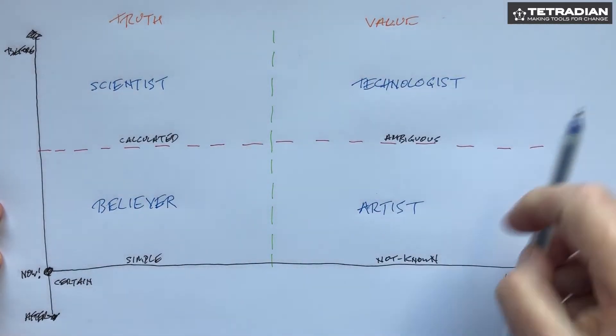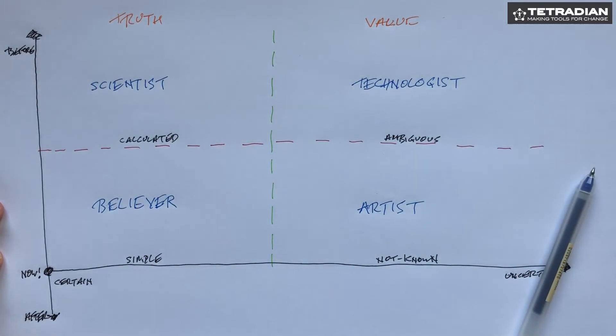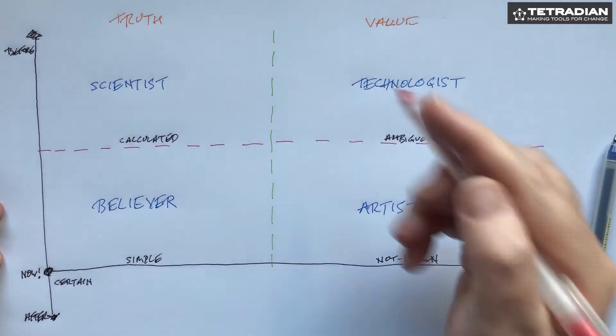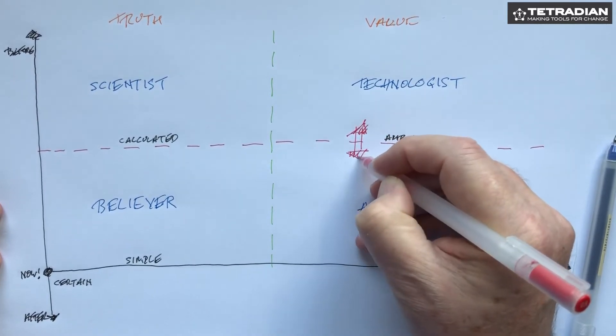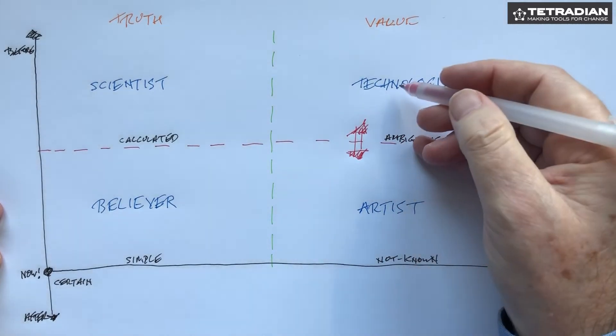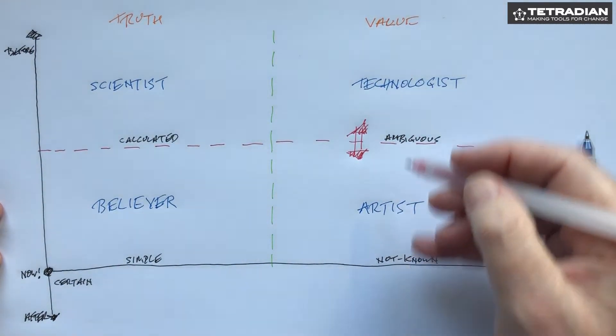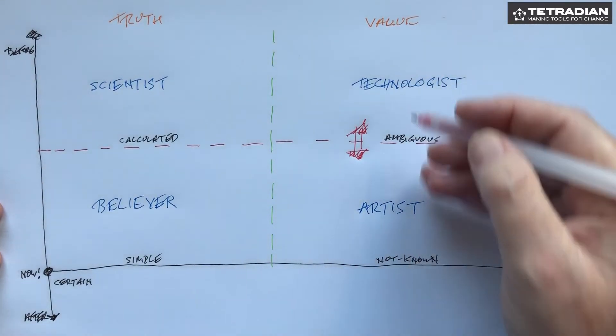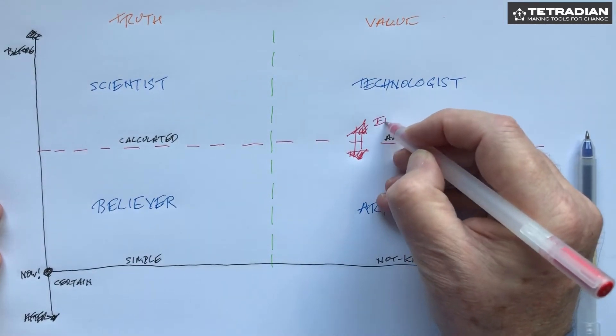Now between each of these there are edges. So this one we might describe as the edge of innovation. An artist comes up with an idea and it bounces backwards and forwards between experiment, new idea, experiment, new idea, but we're always dealing with the uncertain. We can't really produce things very much. So that's the edge of innovation.